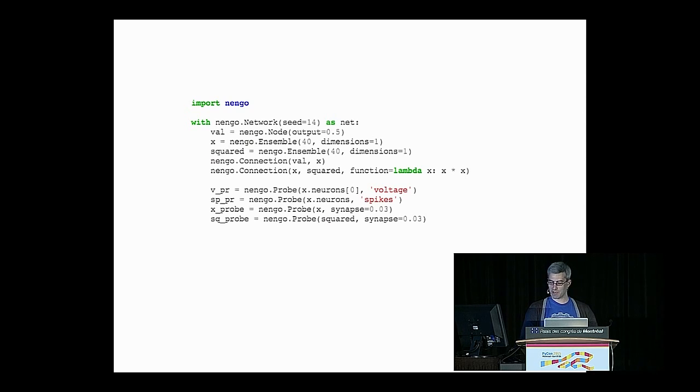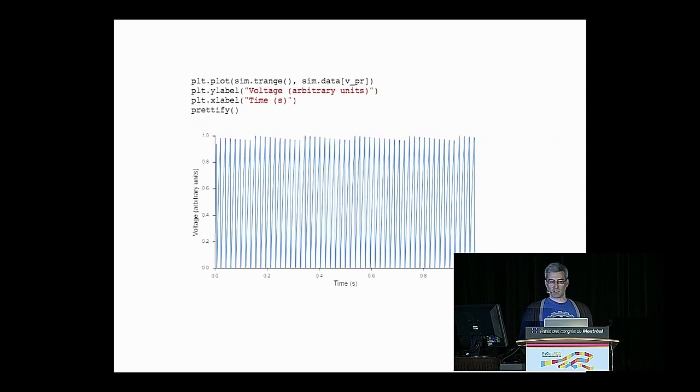So let's look at this happening in Python code. Nengo is a Python library. So we take those nodes and ensembles from before, we group them together in an abstraction called a network, and then we add some probes in order to collect data over the course of this simulation. We create a simulator object. So nengo.simulator, pass it the network that you want to simulate. We run it for a second.